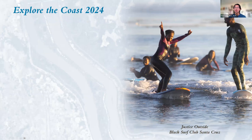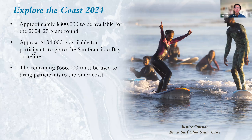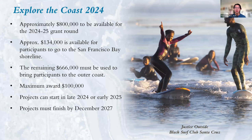We expect about $800,000 to be available for the 2024–2025 grants round, pending budget approval in June. Approximately $134,000 is available for participants going to the San Francisco Bay Shoreline, and the remaining $666,000 must be used to bring participants to the outer coast. The maximum award per project is $100,000. Projects can start in late 2024 or early 2025, and all projects must finish by December 2027.